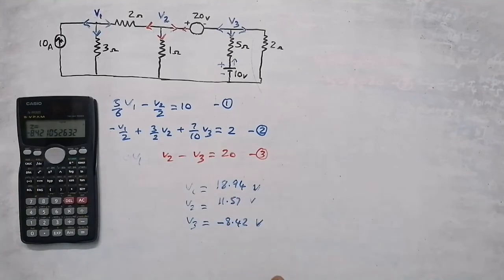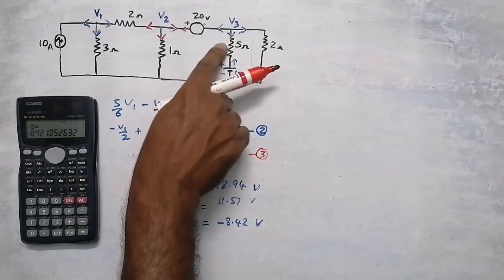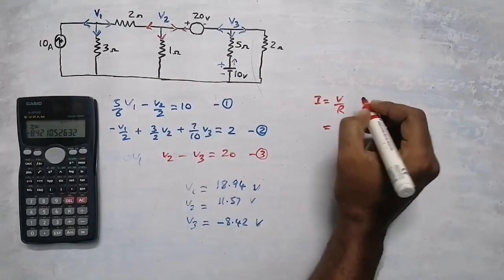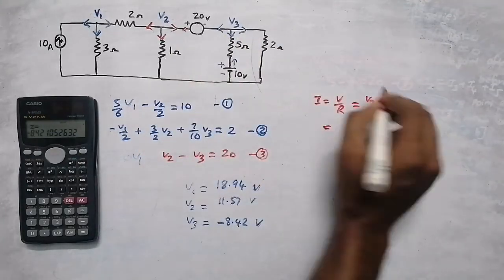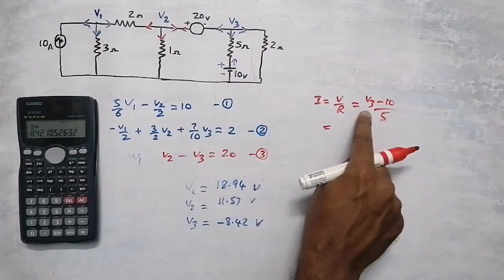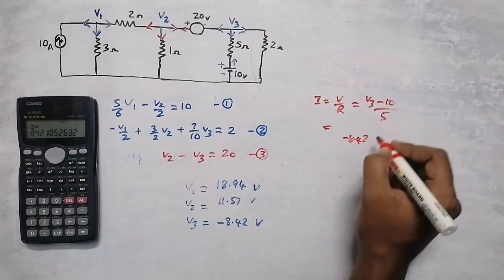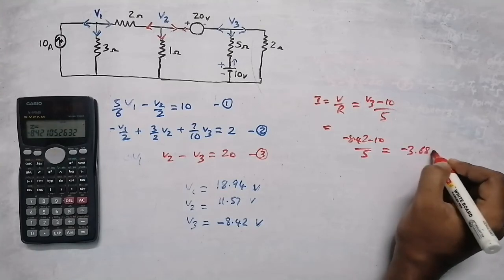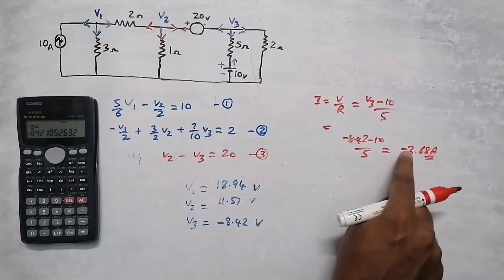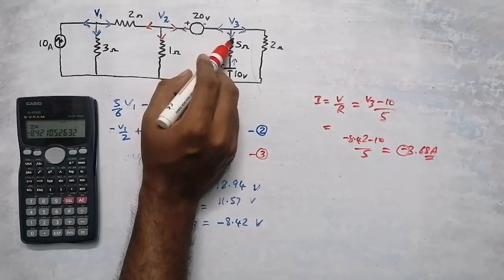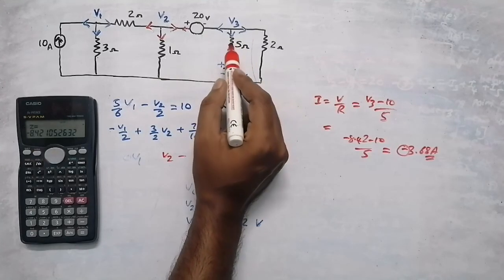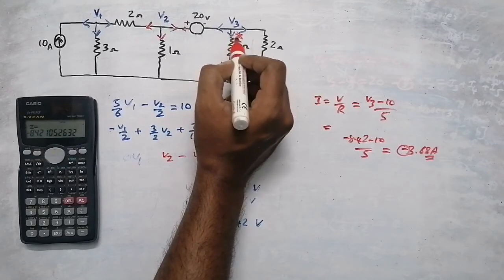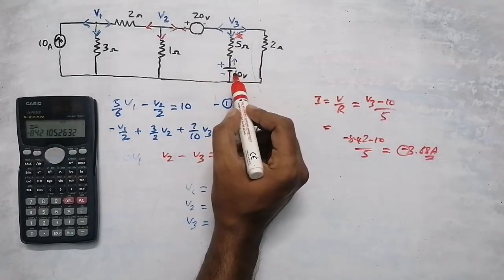Suppose the question asks us to find the current through the 5-ohm resistor. Using I = V/R, and since this resistor is connected to the 10V source, with our assumed direction: I = (V3 − 10)/5 = (−8.42 − 10)/5 = −3.68 amperes. The negative value means our assumed current direction is wrong; the current actually flows in the opposite direction — from the 10V source, through the resistor, to the node.